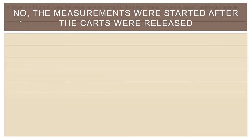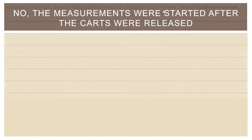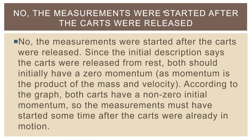Looking back at the graph, these objects are clearly starting with a non-zero amount of momentum. The problem description clearly states the carts are initially at rest on a frictionless track. Because it says they were initially at rest, but the graph shows they were not initially at rest, then we can conclude the measurements didn't begin at the moment of release — if they were initially at rest, they'd have zero momentum. Pause this video and write that down, adding any parts of the explanation missing from your own answer.